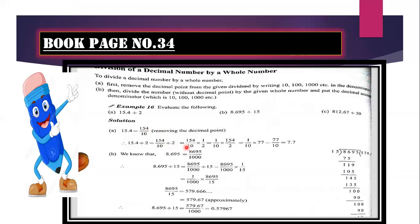After successfully converting our term into a fraction, we will divide it by 2. We have to change the sign of division into multiplication and flip or reciprocate the next term. The reciprocal of 2 is 1 over 2. After that, I will move towards cancellation. Divide 2 into 154 in your rough work — you will get 77. And 77 over 10 gives you 7.7. On the same basis you can try the next example.